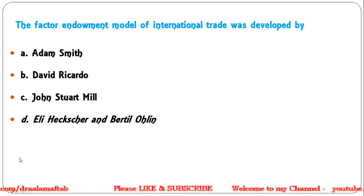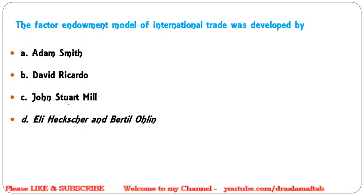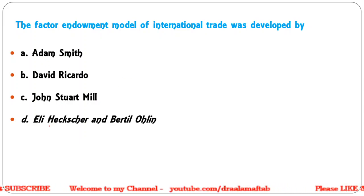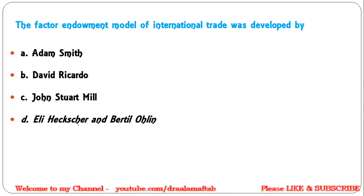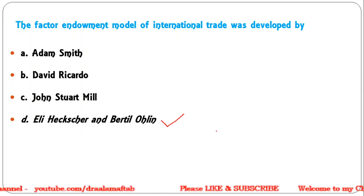Next: The factor endowment model of international trade was developed by — Adam Smith; Ricardo; John Stuart Mill; Heckscher and Ohlin. Correct answer is D — Eli Heckscher and Bertil Ohlin.